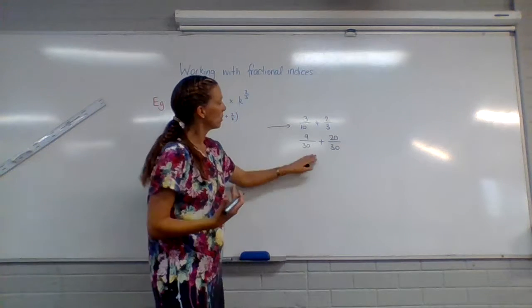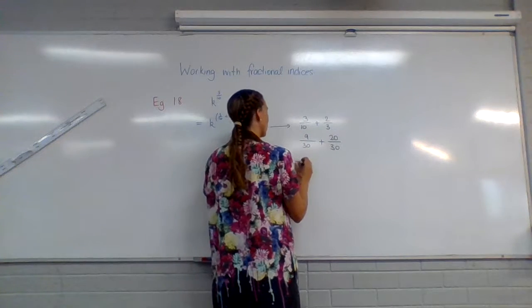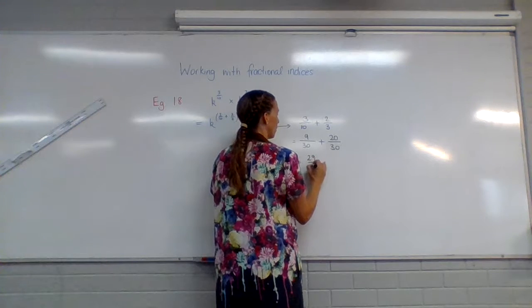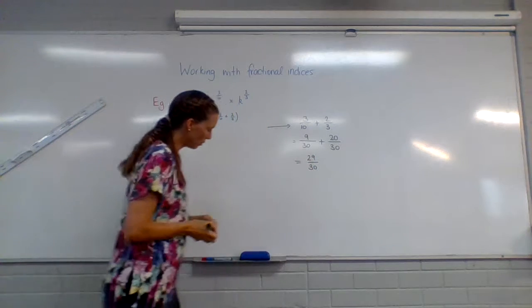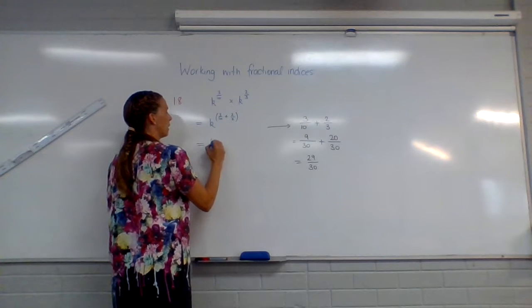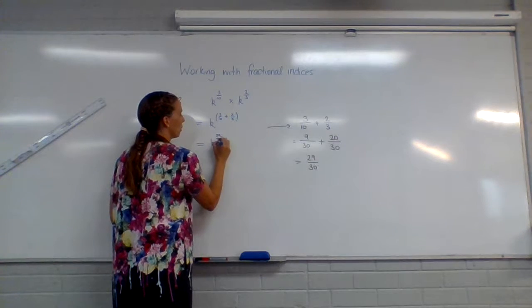Now, once we have a common denominator, the rules of fractions say I just need to add the top. So I've got 29 over 30. So moving back over here, I can say this equals k to the 29 on 30.